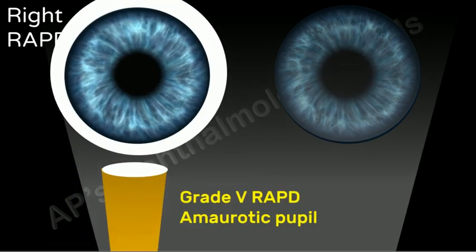Grade 5 is also referred to as an amaurotic pupil, i.e. the eye has no perception of light and the pupil does not show even mild constriction to direct light, but responds normally to consensual light.